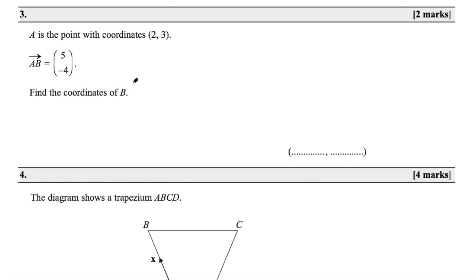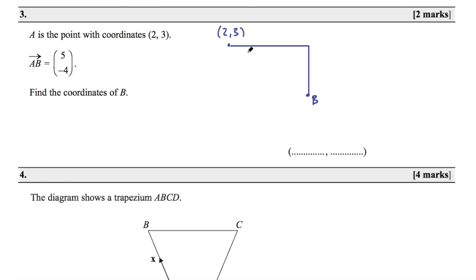Question 3 says A is the point with coordinates (2, 3). The vector AB equals (5, −4). Find the coordinates of B. So A is at point (2, 3) and we need to go across 5 and down 4 to get to B. All we need to do is add 5 and subtract 4 from the x and y coordinates respectively. So 2 plus 5 is 7, and 3 minus 4 is −1. So B has coordinates (7, −1). That's how we find coordinates using vectors.